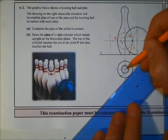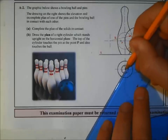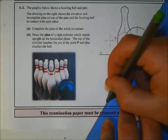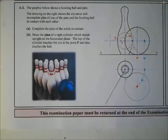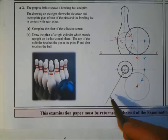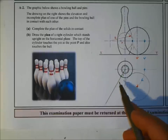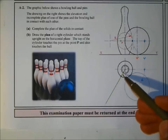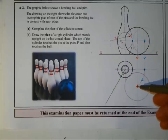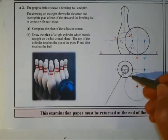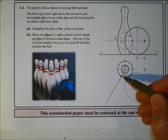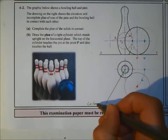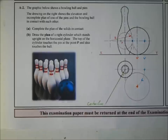First, since we know it's touching point P, if we join the center of the pin to point P and extend that line out — shown here in a different color — we know that line passes through the center of the new cylinder. Working backwards: just as joining two circle centers gives a point of contact, here joining the point of contact to the center gives you a center line. This is the center line.